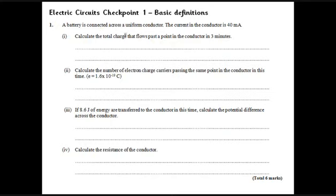We start with a battery connected to a conductor. The current in the conductor is 40 milliamps. Calculate the total charge that flows past the point in three minutes. We're looking for an equation that links charge, current, and time. That equation is Q = It. A couple of things to notice: 40 milliamps needs to be converted to amps by multiplying by 10^-3. The time is in minutes, so that's 3 times 60 seconds.